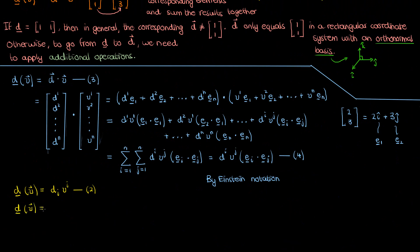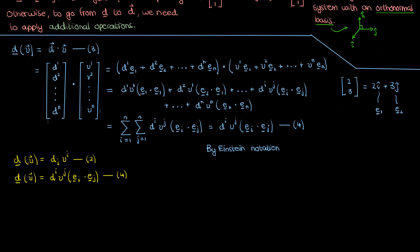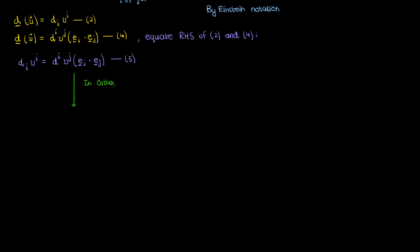Let's copy paste equation 2 and equation 4. These two equations represent different ways of calculating the same thing — the output when you apply the dual vector d to the regular vector v — so their right-hand sides must be equal. Equating them gives what I'll call equation 5. When I have an orthonormal basis, meaning each basis vector has magnitude 1 and is perpendicular to all others, the dot product of e sub i and e sub j becomes 1 when i and j are the same and 0 when they're different. In this case, the right-hand side of equation 5 is nonzero only when i equals j, and we can replace the index j by i.